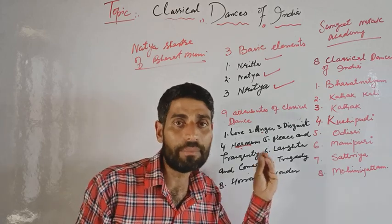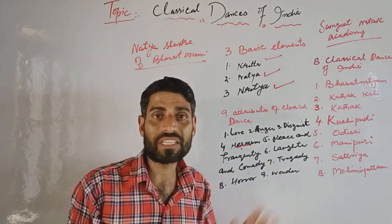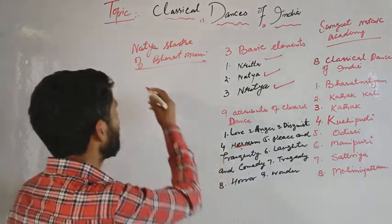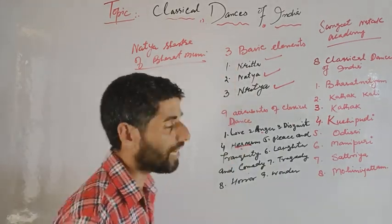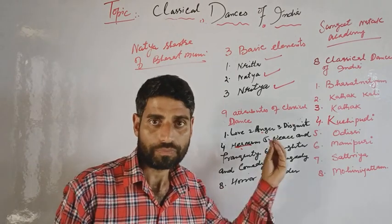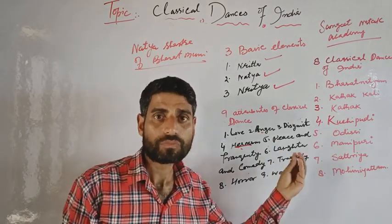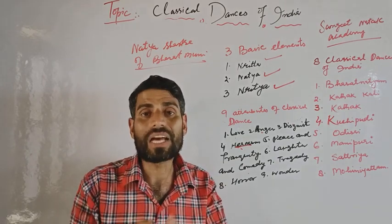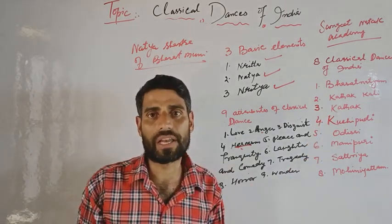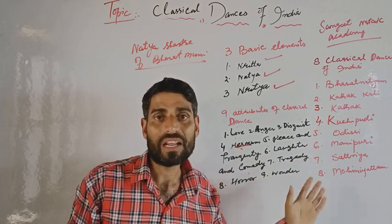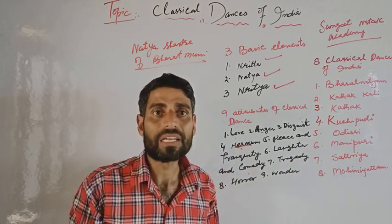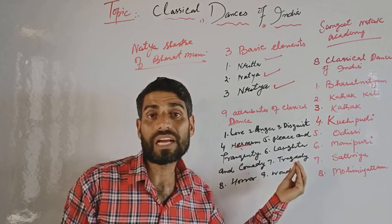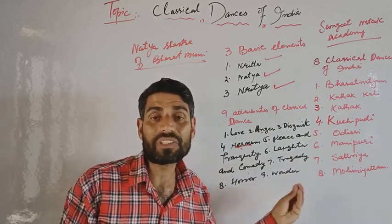According to the Sangeet Natak Academy, which is the national academy of music, drama, and dance, eight classical dances of India are recognized. These are: Bharatnatyam, Kathak, Kathakali, Kuchipudi, Odissi, Manipuri, Sattriya, and Mohiniyattam.